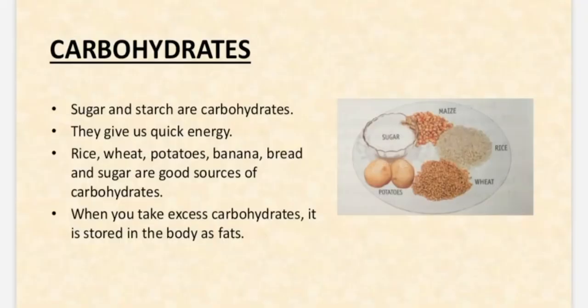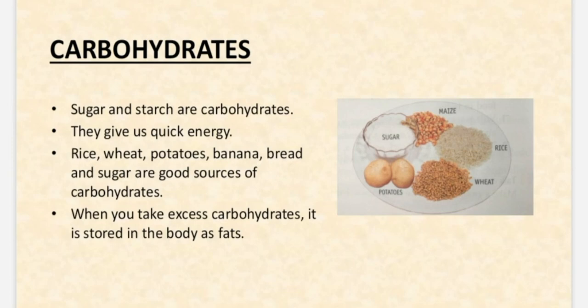First we'll start with carbohydrates. What are carbohydrates, and what are the foods rich in carbohydrates? Carbohydrates contain sugar and starch. They are quick energy givers — they give us quick energy. Foods rich in carbohydrates are rice, wheat, potatoes, bananas, bread, and sugar. When you take excess carbohydrates, they are stored in the body in the form of fats.